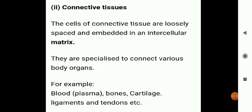Next is connective tissues. Connective tissue is a binding and supporting tissue distributed throughout the body, forming about 30 percent of the body weight. Main examples are blood, blood plasma, bones, cartilage, ligaments, and tendons. The function of connective tissues is to bind structures — such as muscles with the skin and muscles with bones — and to form a supporting framework of cartilage and bones in the body.